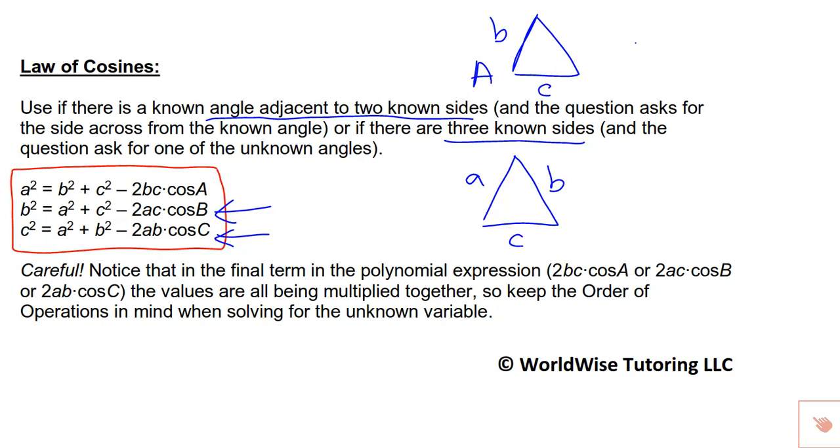Just like with law of sines, I do want to caution you about a few things. Notice that this last term in the polynomial expression, all of those terms are being multiplied together. So 2 times b times c times cosine of A. Keep that in mind when you are solving and use your order of operations.